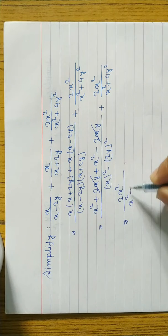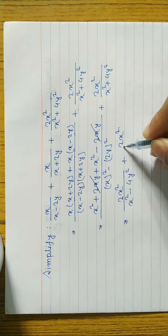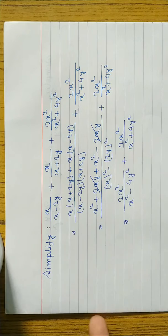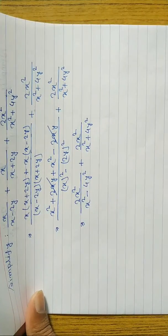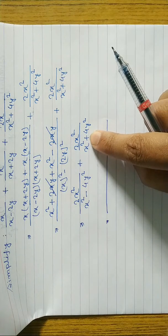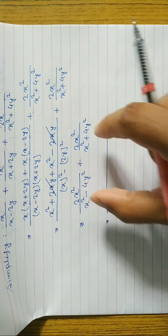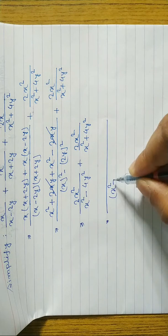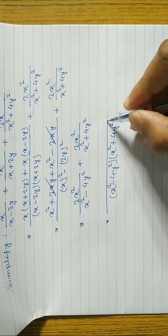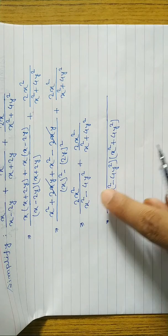So we write 2x square by (x square minus 4y square) plus 2x square by (x square plus 4y square). Now we take the LCM again. In the denominator, x square plus 4y square and x square minus 4y square have nothing in common, so we take both terms. We then divide the denominator — x square minus 4y square cancels with itself.